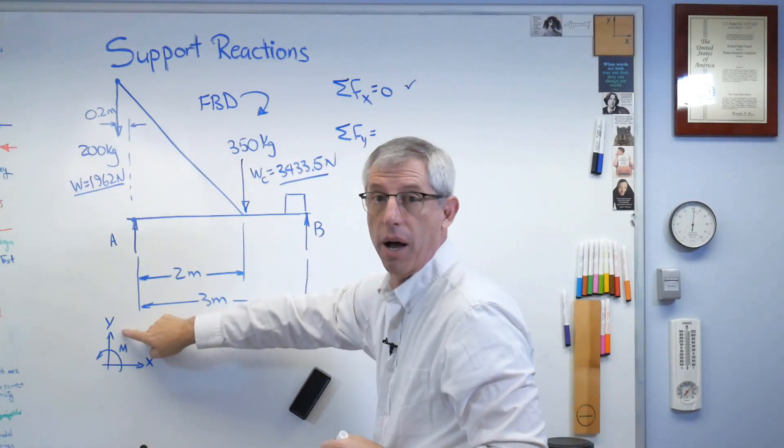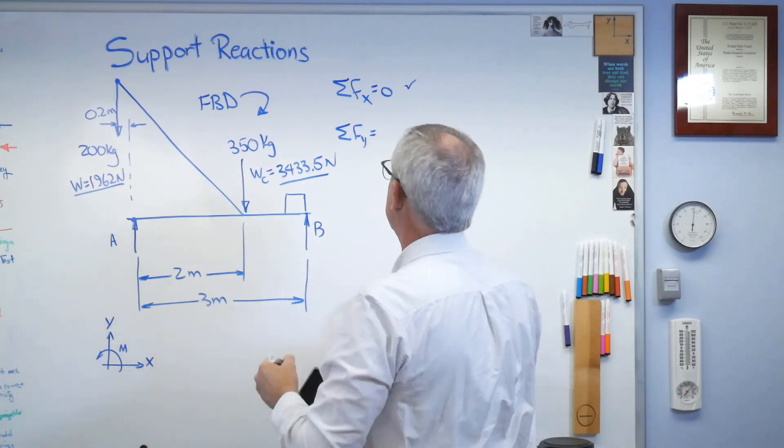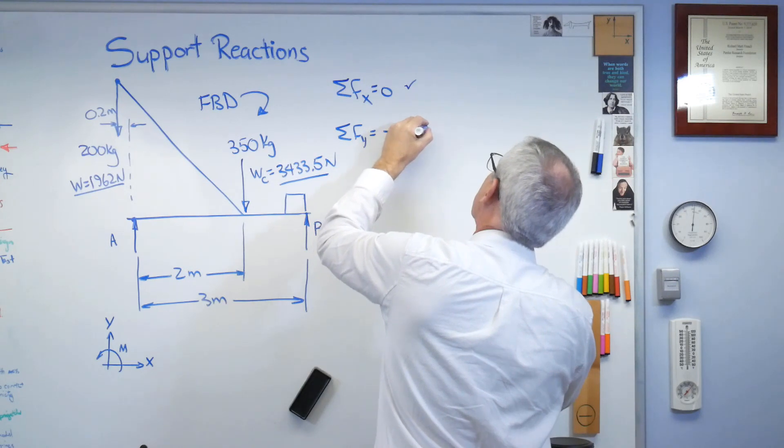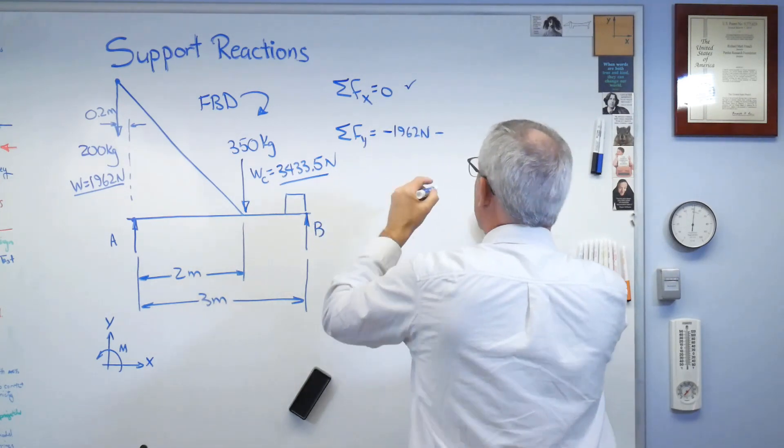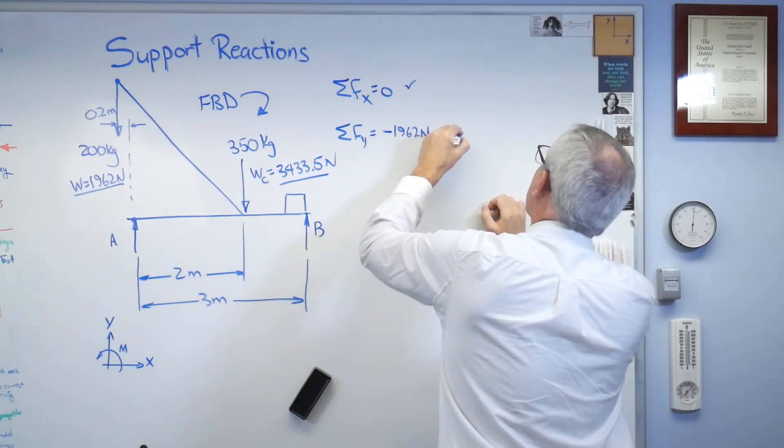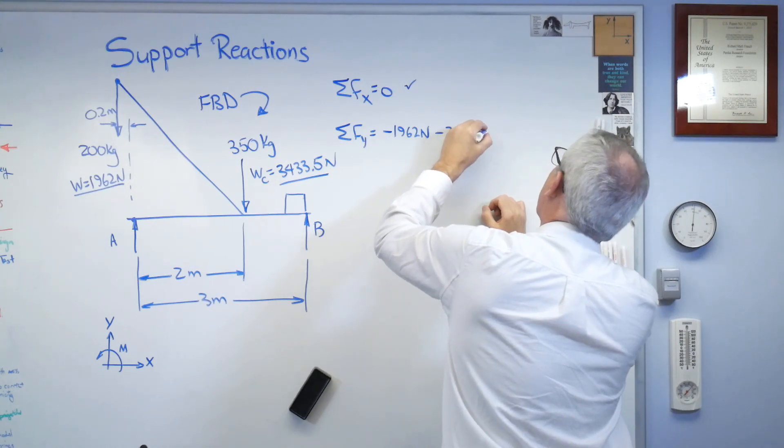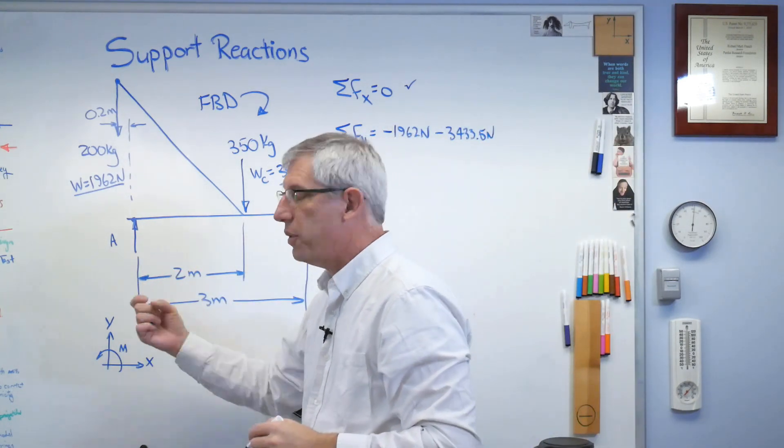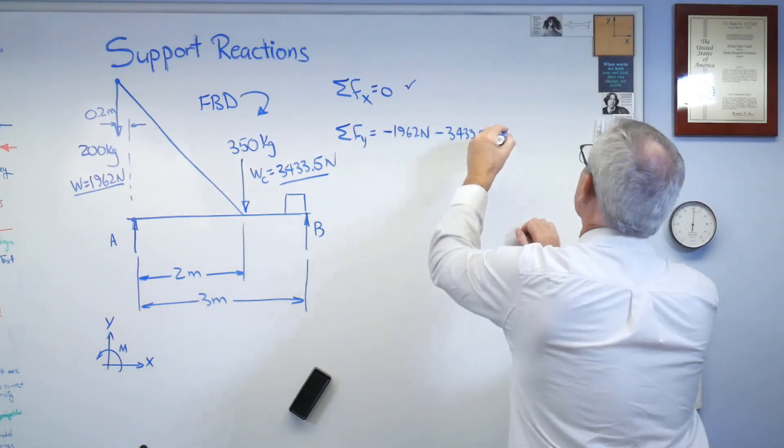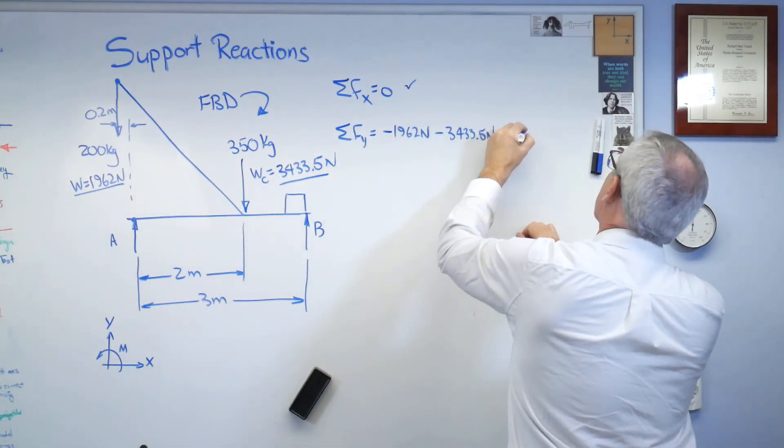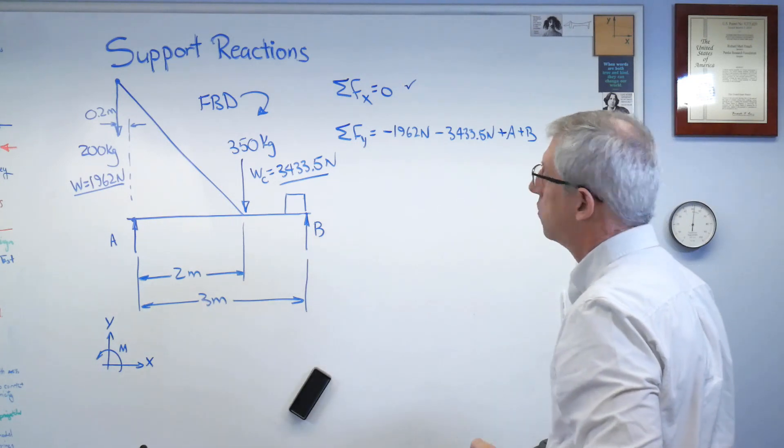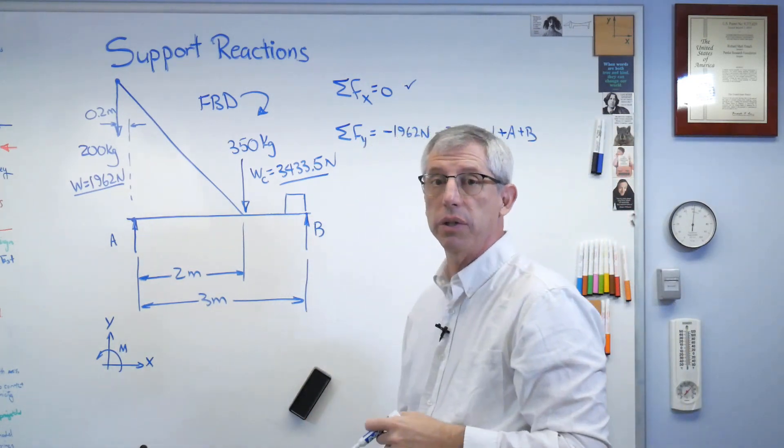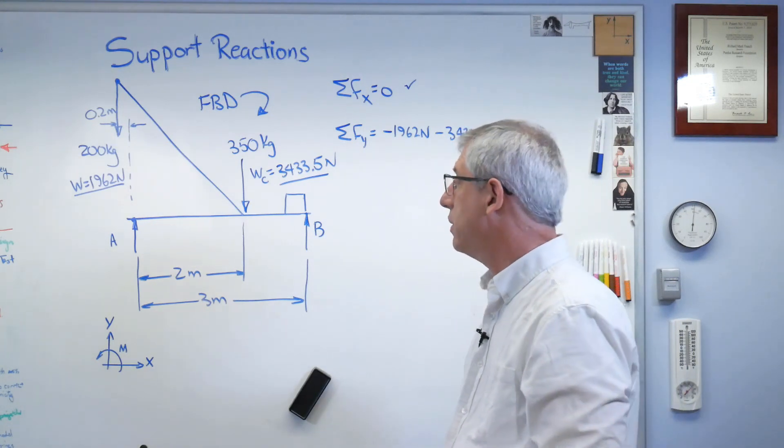Okay. So there we go. Those are our two weights. So let's add this up. Those are down, right? And that's opposite our sign convention. So let's listen to the negative: minus 1,962 Newtons minus 3433.5 Newtons. Now, plus A plus B. Those are up. So those are in the positive direction. So look at that. So easy a professor could do it.